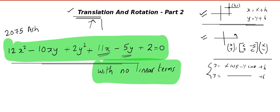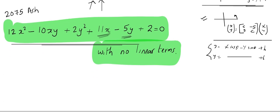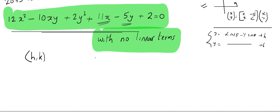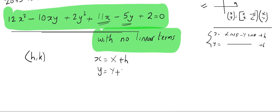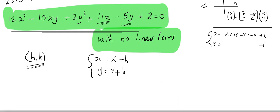We want to find h, k such that the new equation will not have any linear term. Let h, k be the new origin and let the transformations be x = X + h, y = Y + k, so that the transformed equation will not have linear terms.